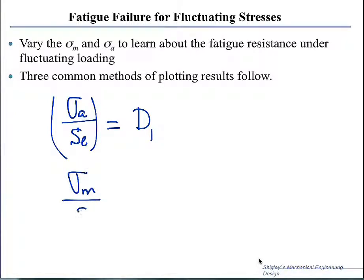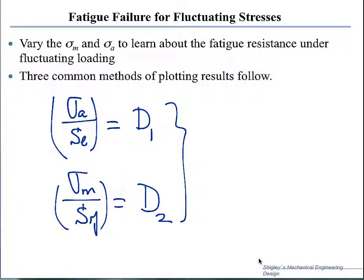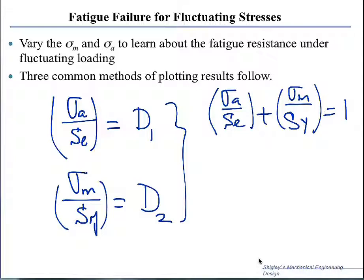If we have a mean component of the stress, sigma mean, and we ratio this to the yield strength of the material, we consider this as a fraction indicating how close we are to yielding — call this D2. If we have both alternating and mean stress, we can combine these linearly, for example D1 plus D2, and that should not exceed 100% under any conditions.